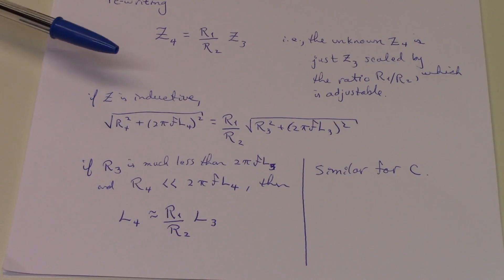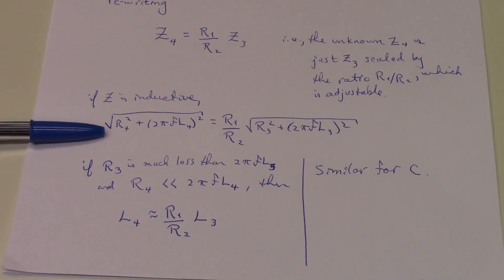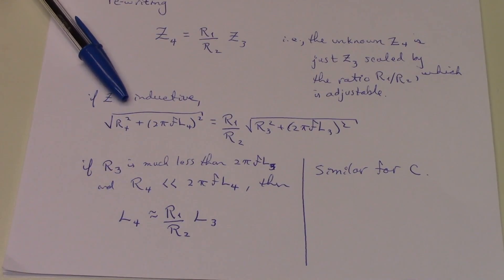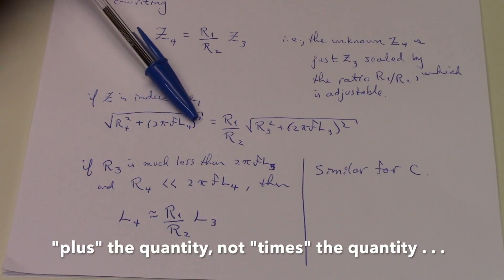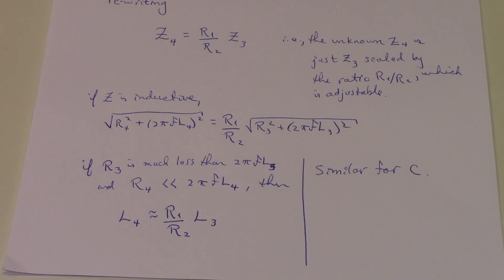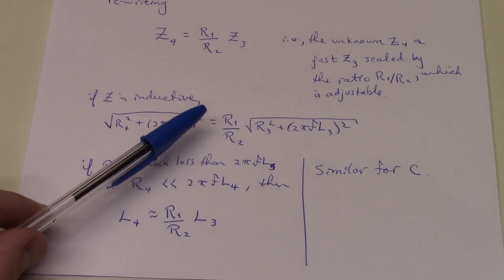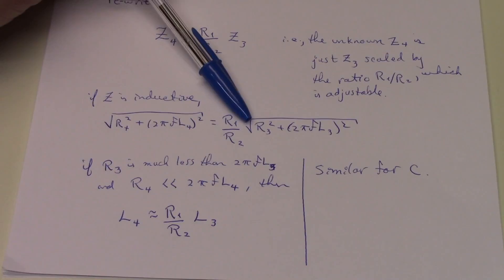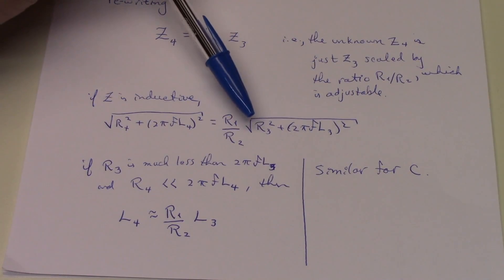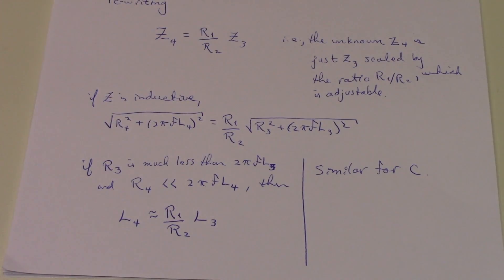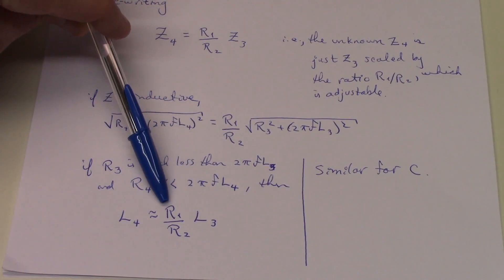We can make that a little bit more intuitive by considering an example where Z is inductive. We know that the impedance for an unknown inductor will be the square root of the resistance of that inductor squared plus the quantity 2πFL squared, where 2πFL is the inductive reactance. The above equation tells us that that's equal to R1 over R2 times the analogous thing for the known inductor L3. If the resistances are negligible compared to the reactances, then the unknown L4 equals L3 times the ratio of R1 to R2.